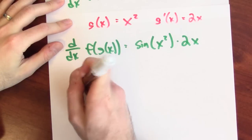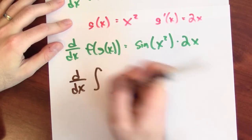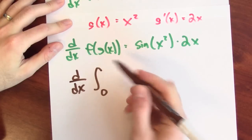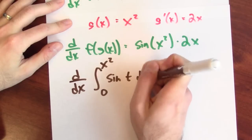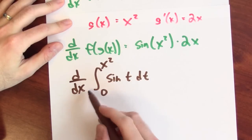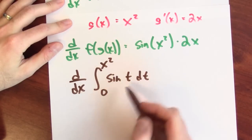The final claim is that the derivative of the integral from 0 to g of x, which in this case is x squared, of sine t dt, is the derivative with respect to x of f of g of x.